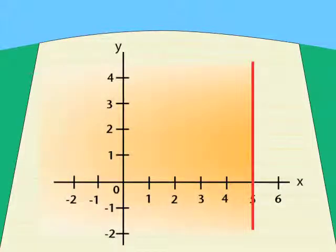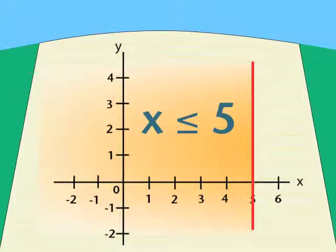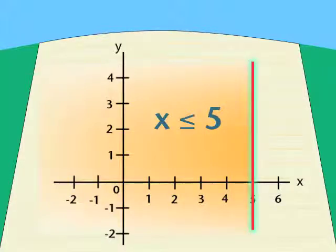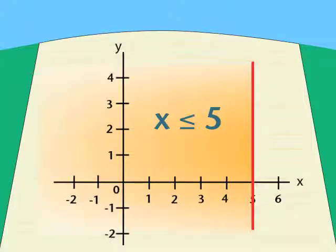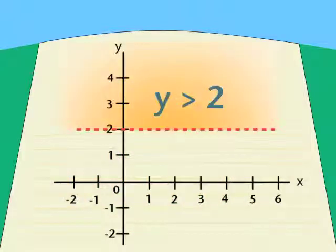Occasionally we must graph special cases where only one letter appears in the inequality — x is less than or equal to 5, for example. But we graph it as if there were two variables. The graph is the line, but it only crosses the x-axis in this case. It's parallel to the y-axis because any value for the other variable will work. In another version, we use a broken line to say not including two — only values greater than two.